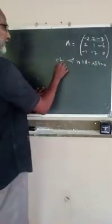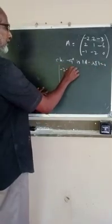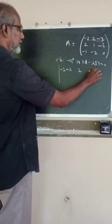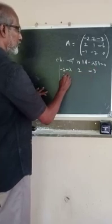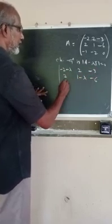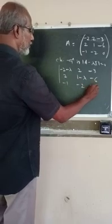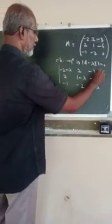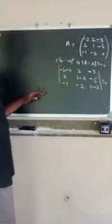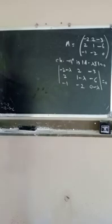That is, we can write the matrix: row 1 is (minus 2 minus lambda), 2, minus 3; row 2 is 2, (1 minus lambda), minus 6; row 3 is minus 1, minus 2, (0 minus lambda), equal to 0. Now, to find the characteristic equation, we can use the following formula.